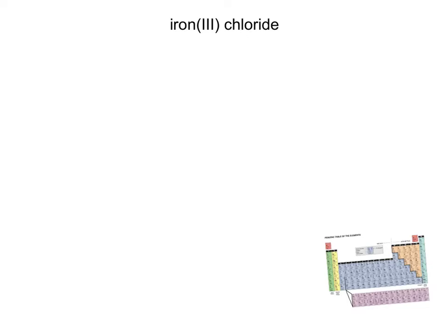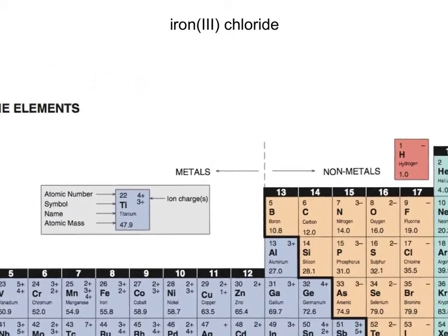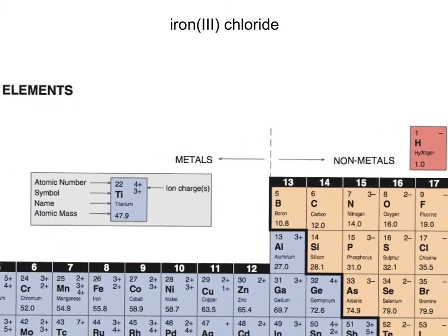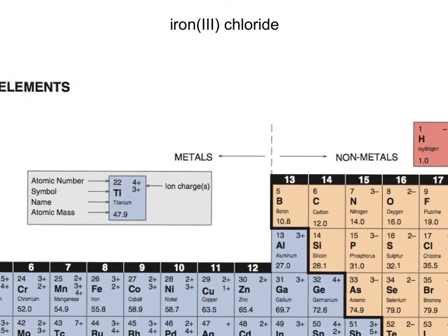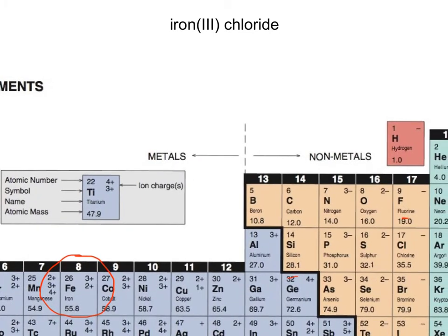The first thing we're going to do is open up the periodic table. Here's the periodic table — let's get this as big as possible so we can see what we need. What we notice here is iron, way down here near the left, and there is chlorine.